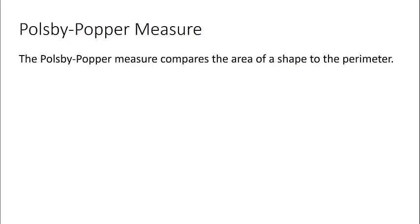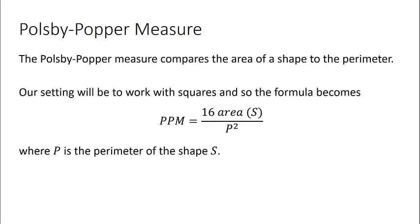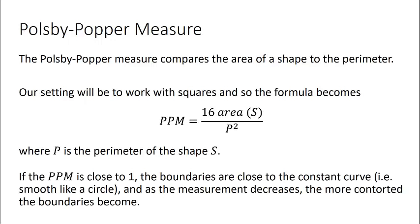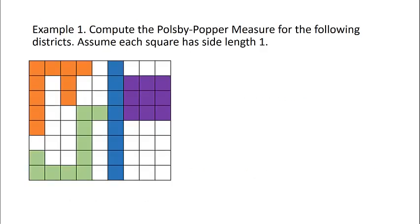So first the Polsby-Popper measure. The Polsby-Popper measure compares the area of a shape to the perimeter. In our setting we'll be working with squares, so our formula will be 16 times the area of the shape divided by the perimeter squared. If the Polsby-Popper measure is a number close to 1, that means the boundaries are close to the constant curve, so it's smooth like a circle. As the measurement decreases, the more contorted the boundaries become.